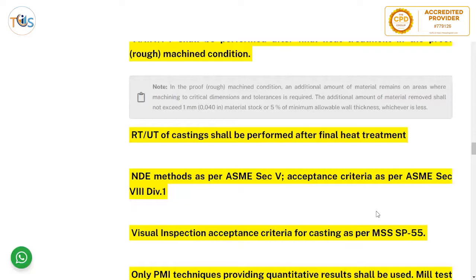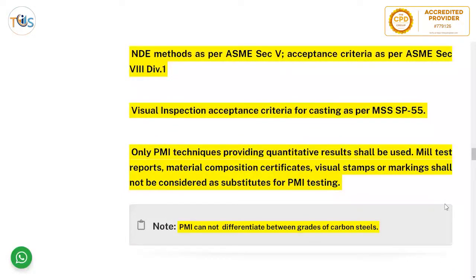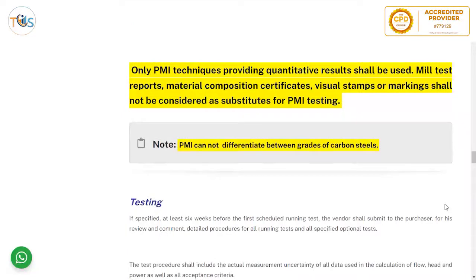NDE is done as per Section 5 and acceptance criteria as per Section 8 Division 1. Visual inspection acceptance criteria for castings is per MSS SP-55. Only PMI techniques that provide quantitative results shall be used, because some PMI techniques give only qualitative results — they identify what type of material it is without giving the percentage of alloying elements. Quantitative PMI shows not only the material type but also the alloying element composition.